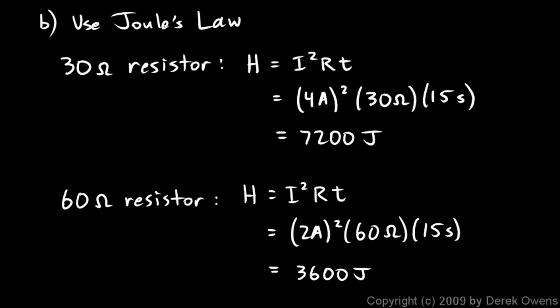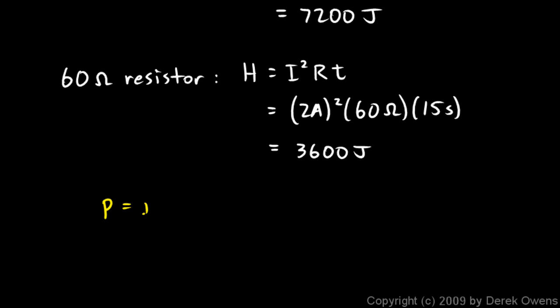The way we determine that is by finding the power. If you didn't remember Joule's law you could still find the power. You could still say P equals IV and find the power in that heating element and then find the energy dissipated. Energy is power times time, or you could have said P equals I squared R or P equals V squared over R.